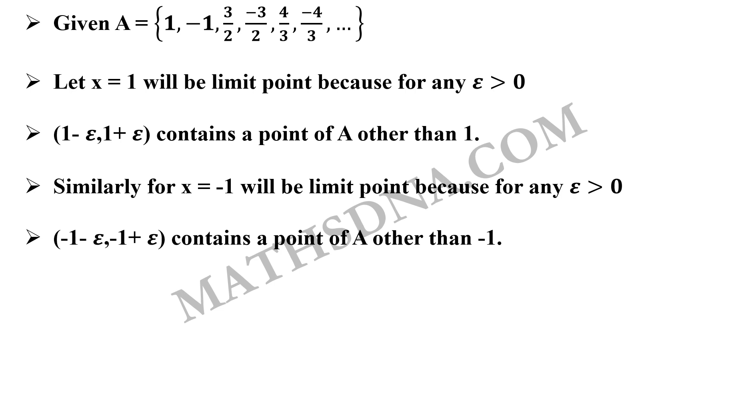As well as for -1. When you take -1 and for any epsilon greater than 0, the interval (-1 - epsilon, -1 + epsilon) will contain a point of A other than -1. Why? Because the points -3/2, -4/3, -5/4, -6/5 and so on, all these points will come closer to -1 and no matter how small epsilon you take, at least you will find one point that is contained in the open interval and so -1 will also be a limit point.